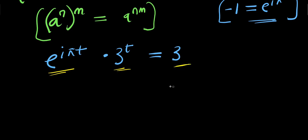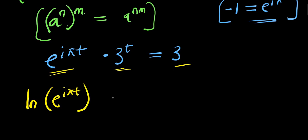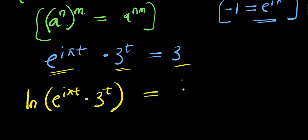What we need to do now is consider the natural log. We take the natural log of e to the power of i times pi times t, times three to the power of t, and this equals the natural log of three.